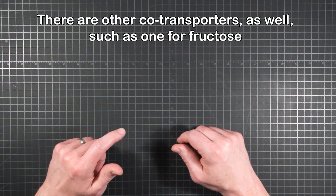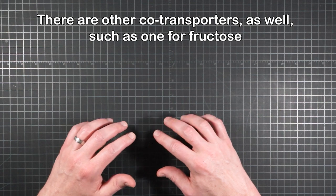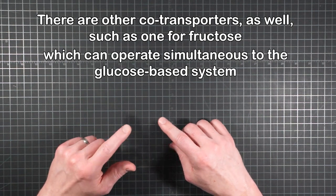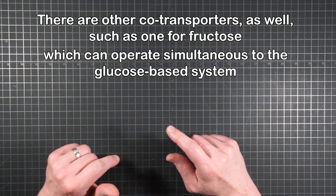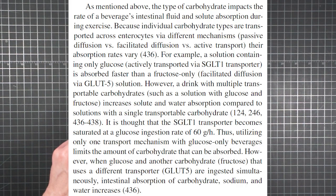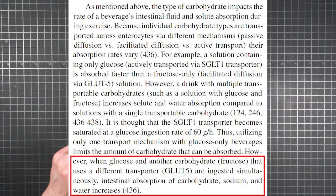So as it happens, there are other co-transporters like one for fructose, and they can work side by side with the glucose-based system. From OptiComp, when glucose and another carbohydrate, fructose, that uses a different transporter are ingested simultaneously, the intestinal absorption of carbohydrates, sodium, and water increases.